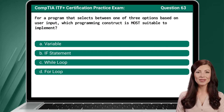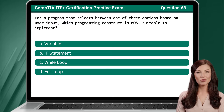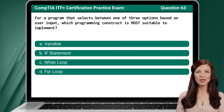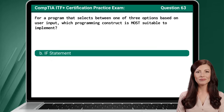Question 63: For a program that selects between one of three options based on user input, which programming construct is most suitable to implement? The answer is B: if statement.